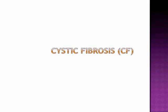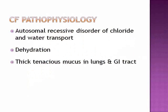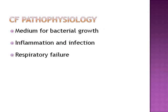Cystic fibrosis. It's a hereditary disorder characterized by lung congestion, infection, and malabsorption of nutrients by the pancreas. It's an autosomal recessive disorder of chloride and water transport affecting certain epithelial cells, especially the respiratory, digestive, and reproductive lining. We see dehydration and a thick, tenacious mucus in the lungs and GI tract. The thick mucus is a good medium for bacterial growth, so inflammation and infection occur in different body systems. Respiratory failure is the most common cause of death.